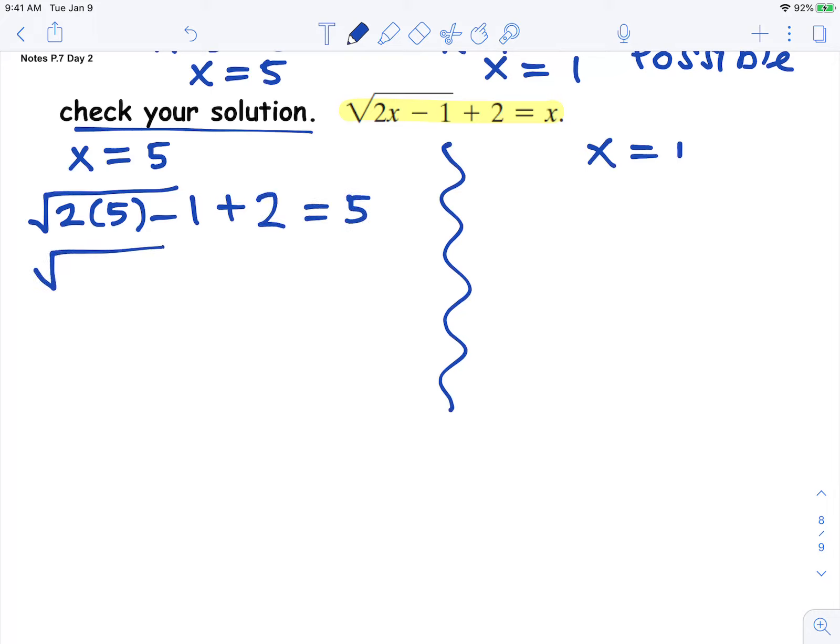Now we simplify. 2 times 5 is 10. Subtract 1 is 9. The square root of 9 is 3. 3 plus 2 is 5. This is true, so we do have an answer for x equals 5 as a solution.